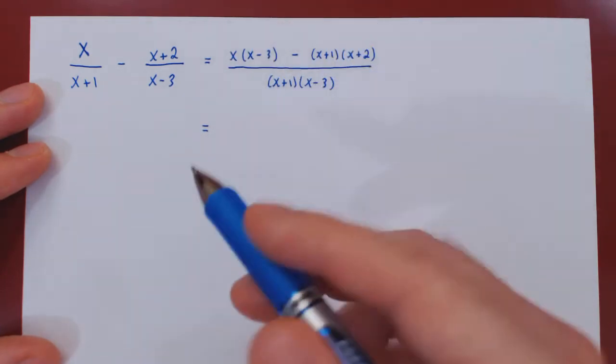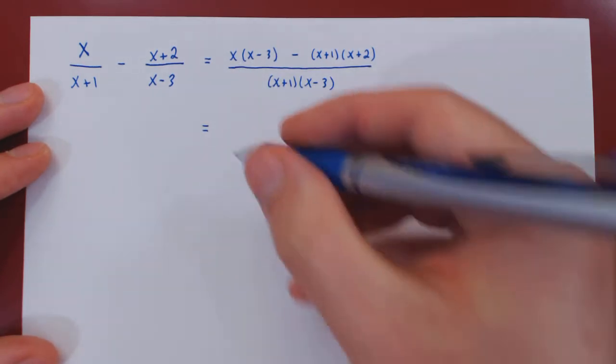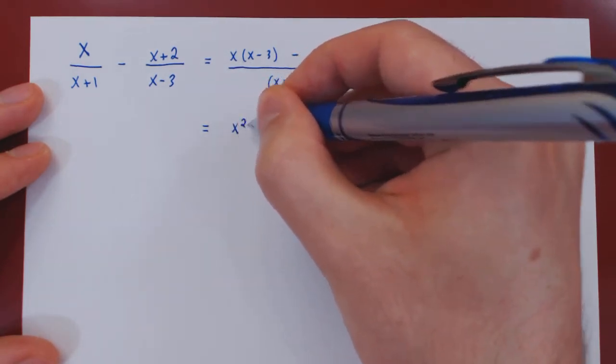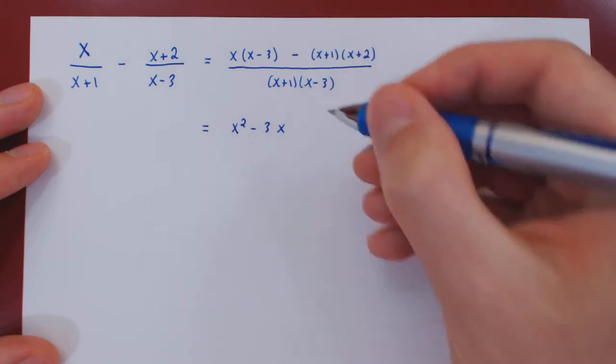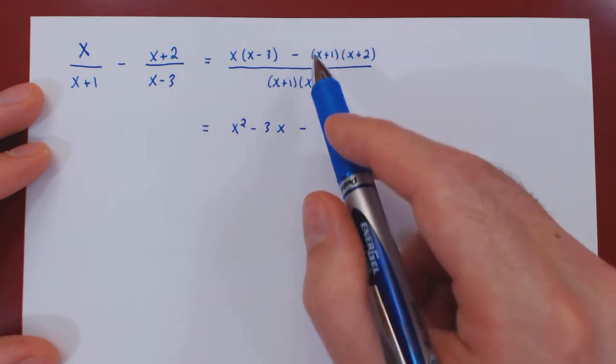So if we expand the first product, we get x squared minus 3x minus, and here be careful, the negative applies to the entire product.